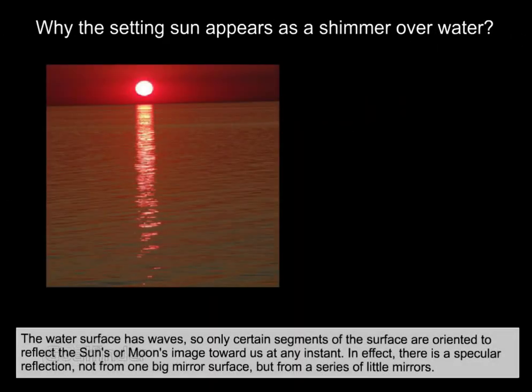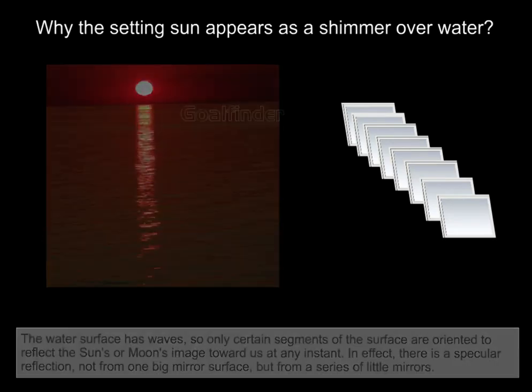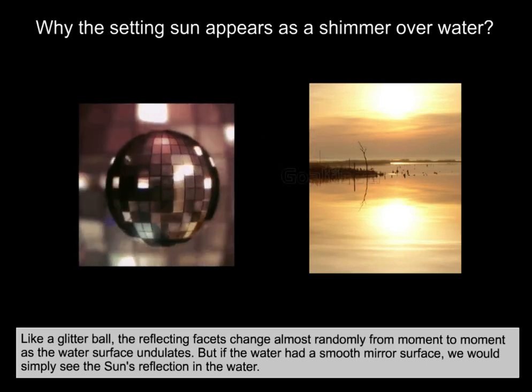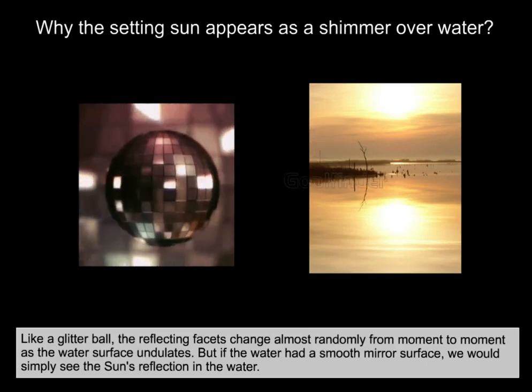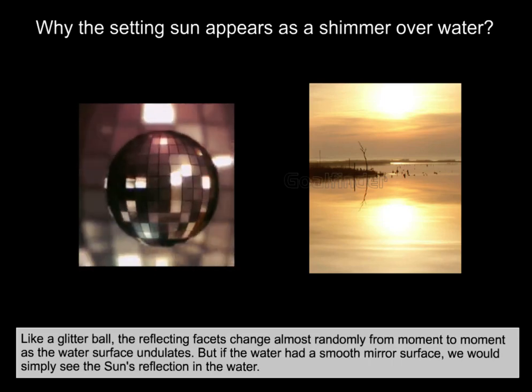Why does the setting sun appear as a shimmer over water? The water surface has waves, so only certain segments of the surface are oriented to reflect the sun's or moon's image towards us at any instant. In effect, there is a specular reflection not from one big mirror surface but from a series of little mirrors. Like a glitter ball, the reflective facets change almost randomly from moment to moment as the water surface undulates.